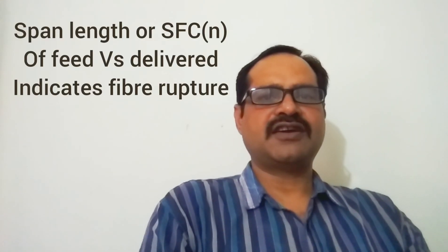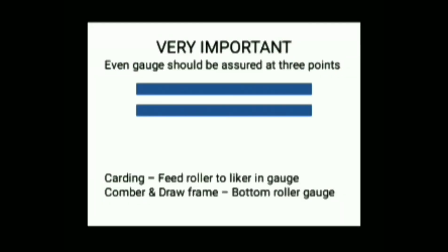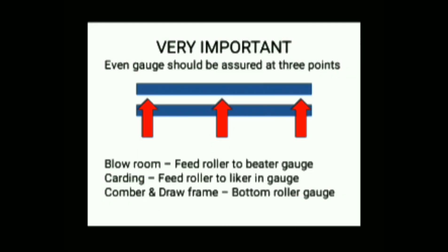Fiber rupture can be judged by checking the fiber length or short fiber percentage of input versus output material for any blowroom beater, carding, comber, or drawframe. All gauges should be even at three points — whether it is the feed roll to beater gauge in blowroom, feed roll to lickerin gauge in carding, or bottom rolls in comber and drawframe drafting zone. The measurement should be assured at left hand side, right hand side, and the middle portion of the rolls and beaters. It should be even at all three points.